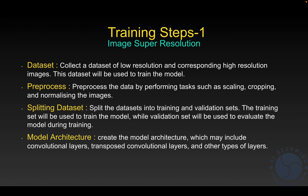The third step is splitting the dataset into training and validation sets. The training dataset is used to train the model. Side by side, we can perform validation on the validation dataset. Once training is finished, we check on the validation set how the model performs and whether it gives better results than it was producing on the training side.